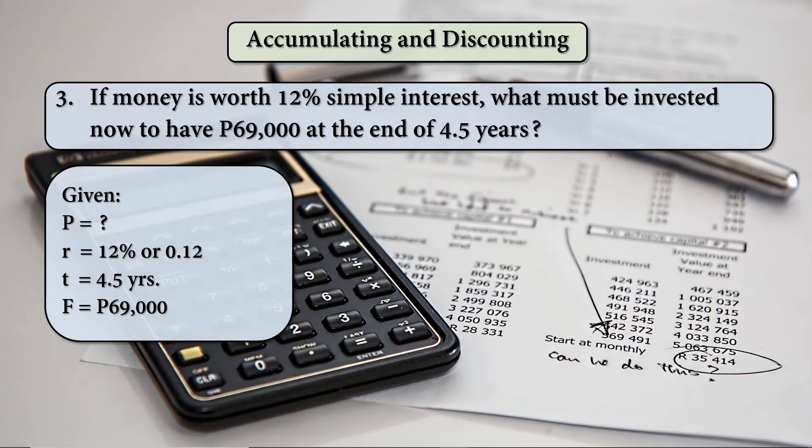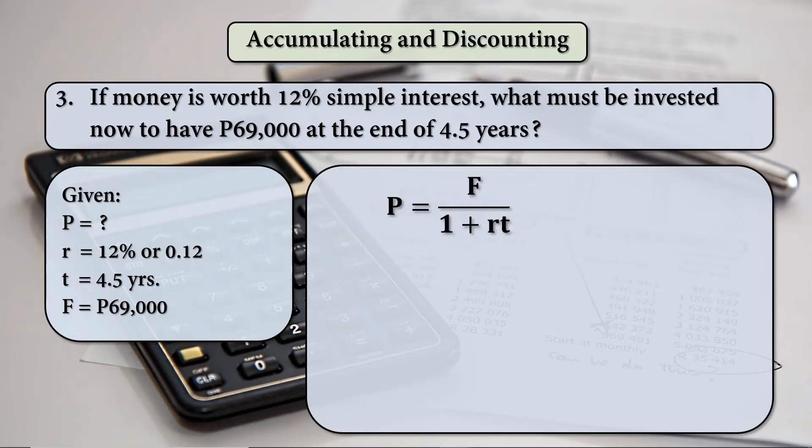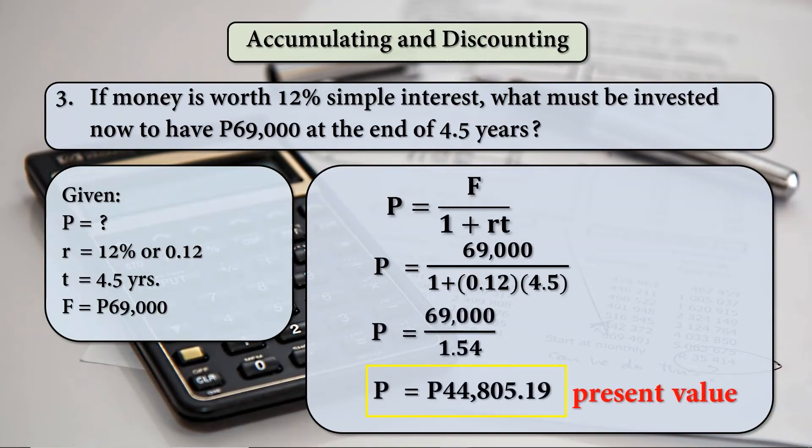Given: R is 0.12, T is 4.5 years, and F is 69,000 pesos. Using this formula, P equals F over 1 plus RT. F is 69,000 over 1 plus 0.12 times 4.5. 0.12 times 4.5 plus 1 equals 1.54. That equals 44,805 pesos and 19 centavos. That is the present value.